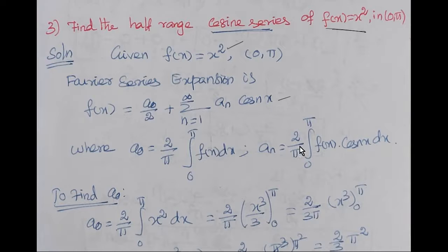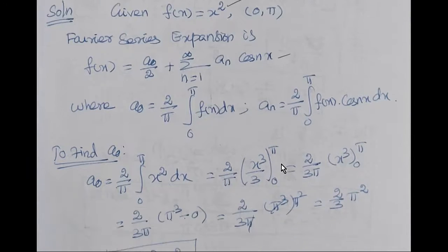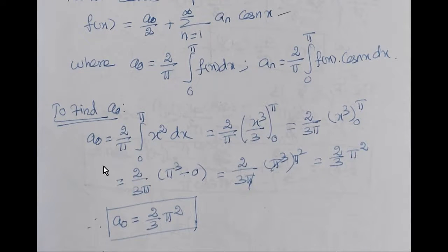So a0 is equal to the formula. First, a0 is nothing but 2 by pi integral 0 to pi f of x. f of x is only x squared, simple function. So 2 by pi x squared dx.